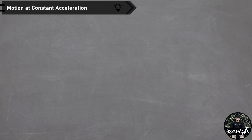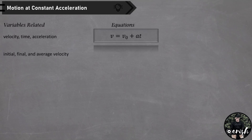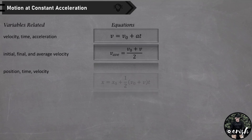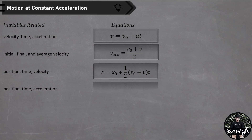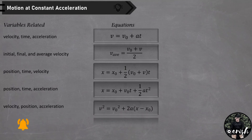For this lecture video, we focus on examples that further illustrate the use of constant acceleration equations of motion. For easier reference, all constant acceleration derived equations of motion are collected in a table with related variables. Equation 1 relates velocity, time, and acceleration. Equation 2 covers initial, final, and average velocity. Equation 3 relates position, time, and velocity. Equation 4 covers position, time, and acceleration. And equation 5 relates velocity, position, and acceleration. All equations revolve around position, velocity, acceleration, and time.